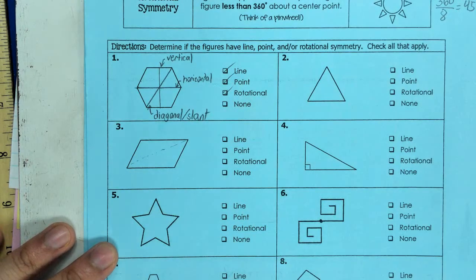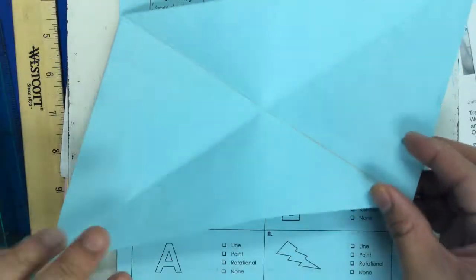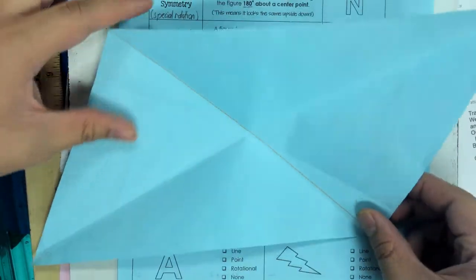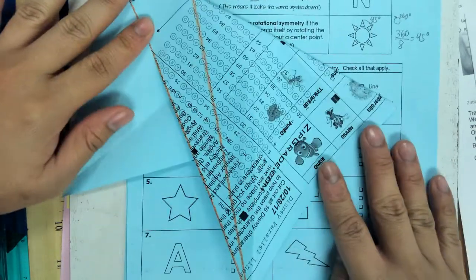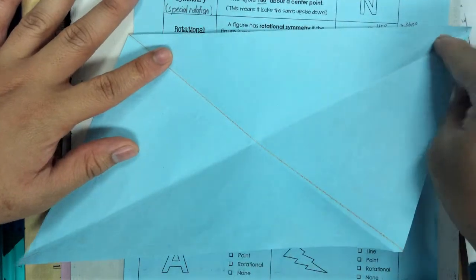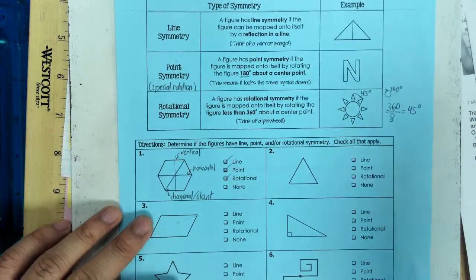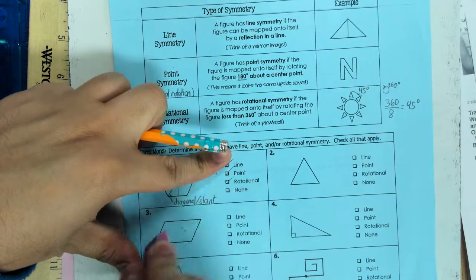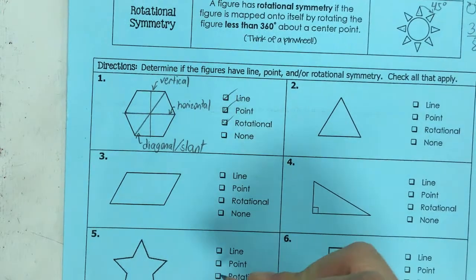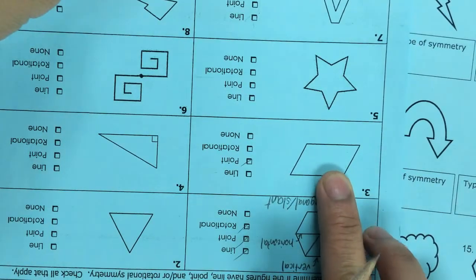A parallelogram can be tricky because the tendency for most is to say oh we can fold it along this line. Here's my parallelogram. If I fold along the slant line, it does not match up. So a parallelogram does not have slant symmetry, be careful of that. What it does have is point symmetry. The parallelogram looks the same upside down.